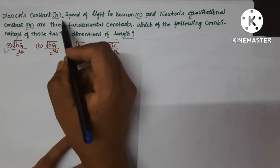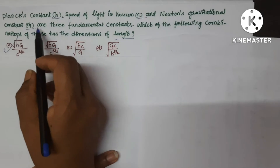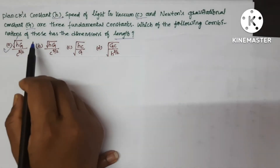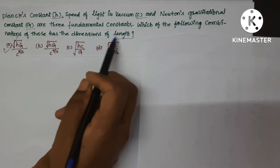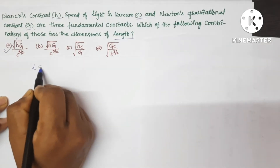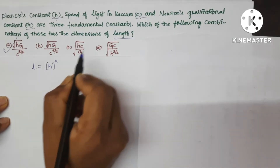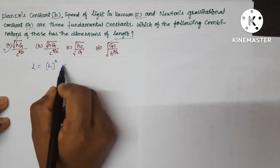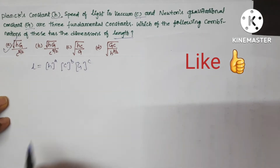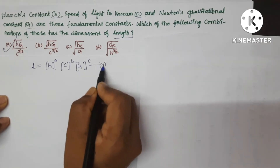Planck's constant H, speed of light in vacuum C, and Newton's gravitational constant G are 3 fundamental constants. Which of the following combinations of these has the dimensions of length? Let L = H^A · C^B · G^C — that is equation number 1.